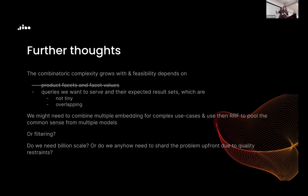Perhaps we can use multiple embedding spaces and blend them via RRF or other techniques like filtering. Just one embedding space for e-commerce search will not work. Even the question of whether we need billion-scale lookup is worth questioning — perhaps we can shard the problem into different spaces. Most of these thoughts developed over the past 36 hours, so there may be gaps, and I'm happy to discuss.